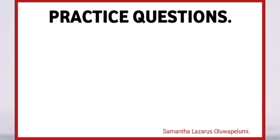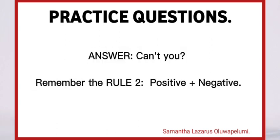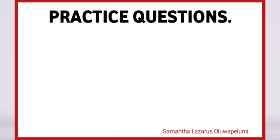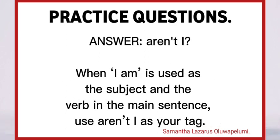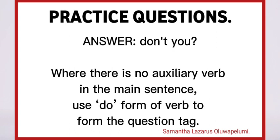Now let's practice some questions together. I will drop the questions on the screen; wherever you are, kindly choose the answer. I will give you five seconds, after which the answer will be provided. You can also pause the video and choose your answer, then resume when you're done. The answer is 'can't you?' — remember rule two: a positive statement takes the negative tag. The answer is 'aren't I' — when 'I am' is used as the subject and verb, use 'aren't I' as your tag. The answer is 'don't you?' — when there is no auxiliary verb, use the do-form.